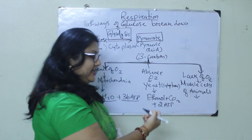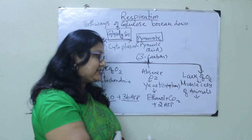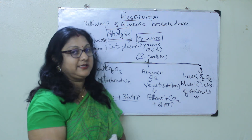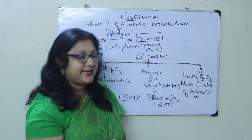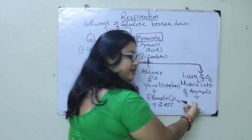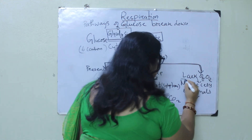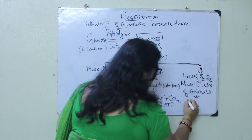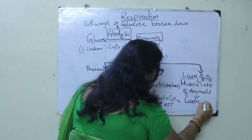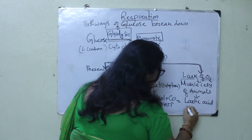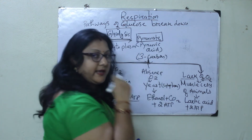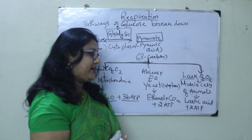We will see the conditions when the muscle cell carries out lactic acid fermentation. This anaerobic respiration due to lack of oxygen produces end products of lactic acid plus 2 ATP.